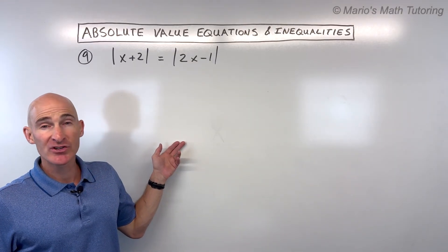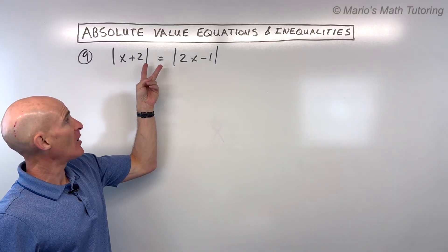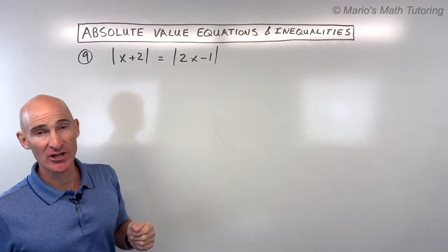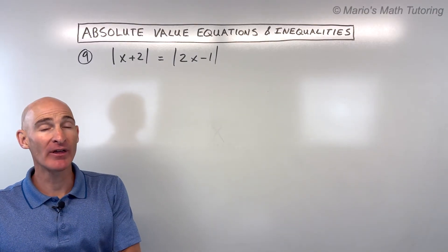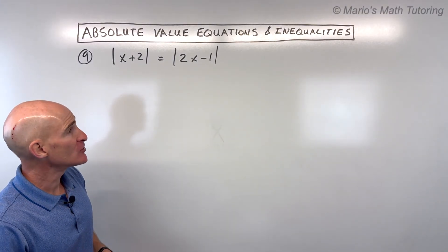For number nine, we have an interesting situation: absolute values on both sides of the equation — |x + 2| = |2x − 1|. Let's dive into how to handle that.